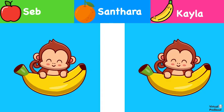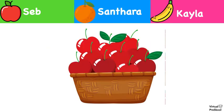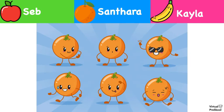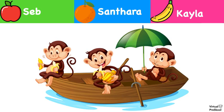This one? Seib, Santara, or Kela? Kela. This one? Seib, Santara, or Kela? This one? Seib, Santara, or Kela? Seib. This one? Saib, Santara, or Kela? Kela. This one, seib, Santara, or Kela? Santara. And this one, seib, Santara, or Kela? Seib. And this one, seib, Santara, or Kela? Kela.